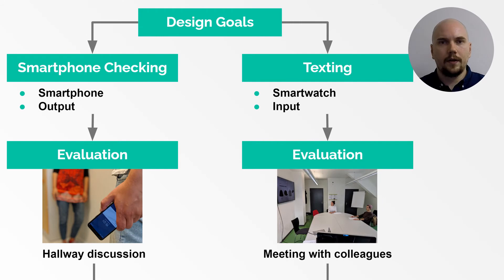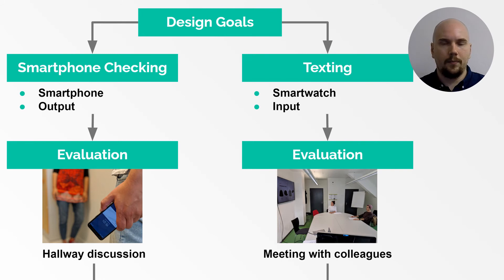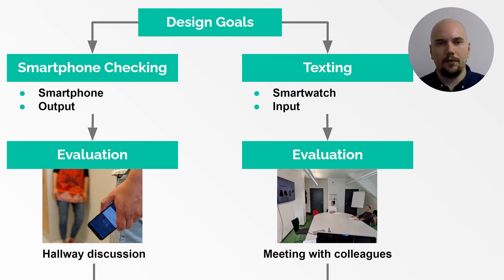We evaluated these two techniques in different social scenarios: a casual hallway discussion and a meeting. In both of them, one study participant was tasked with using one of the techniques without another study participant noticing. The other participant took on the role of the observer, who had varying levels of knowledge about the user's interactive task.